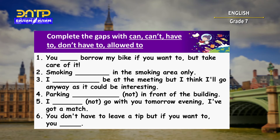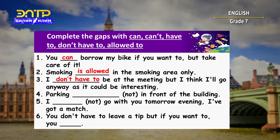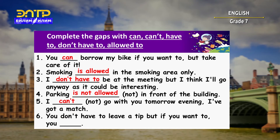Let's check and compare your answers. So the first one is: You can borrow my bike if you want to, but take care of it. Smoking is allowed in the smoking area only. I don't have to be at the meeting, but I think I'll go anyway as it could be interesting. Parking is not allowed in front of the building. I can't go with you tomorrow evening — I've got a match. You don't have to leave a tip, but if you want to, you can. Good job!